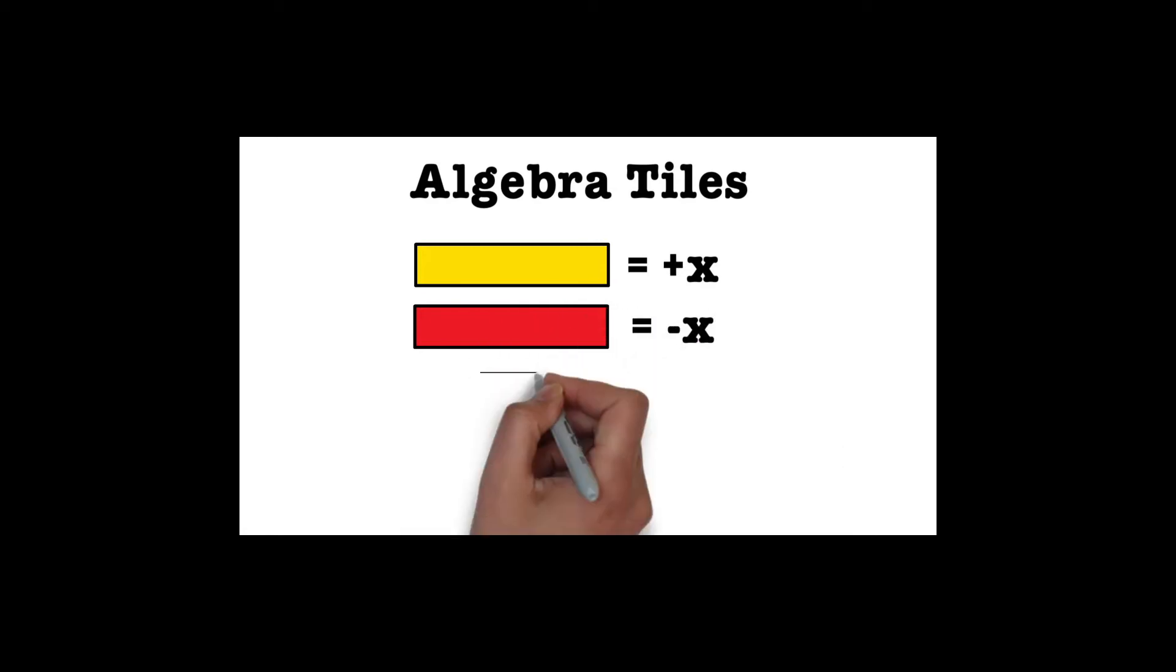We also have small squares, which represent one unit. If the square is yellow, it represents a positive one. A red square represents a negative one.